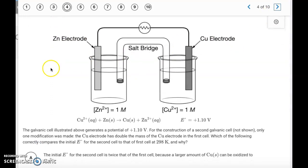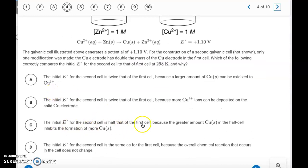Alright, question number four. Which of the following correctly compares the initial voltage for the second cell to that of the first cell? It says for the construction of the second galvanic cell, which is not shown, only one modification was made. The copper electrode has doubled the mass of the copper electrode in the first cell. Okay, so the size and the mass of the electrodes doesn't affect the cell voltage. Only the change in the concentrations in the two cells will affect the voltage. But as long as the electrodes are there, the size of the electrodes does not matter. So we just want to find the answer where it says it's going to be the same. The initial voltage for the second cell is the same as for the first cell, because the overall chemical reaction that occurs in the cell does not change. So it's going to be letter D.